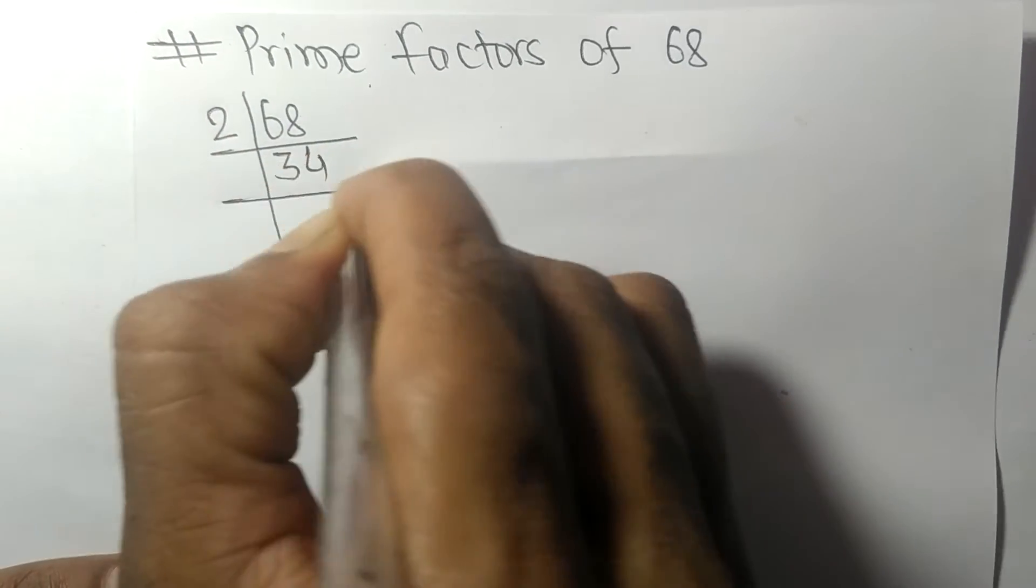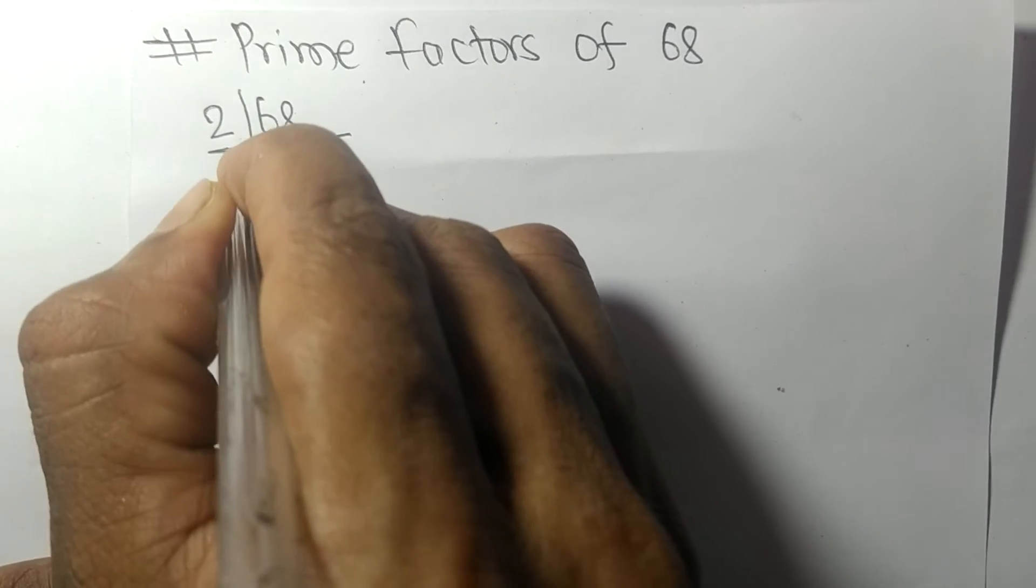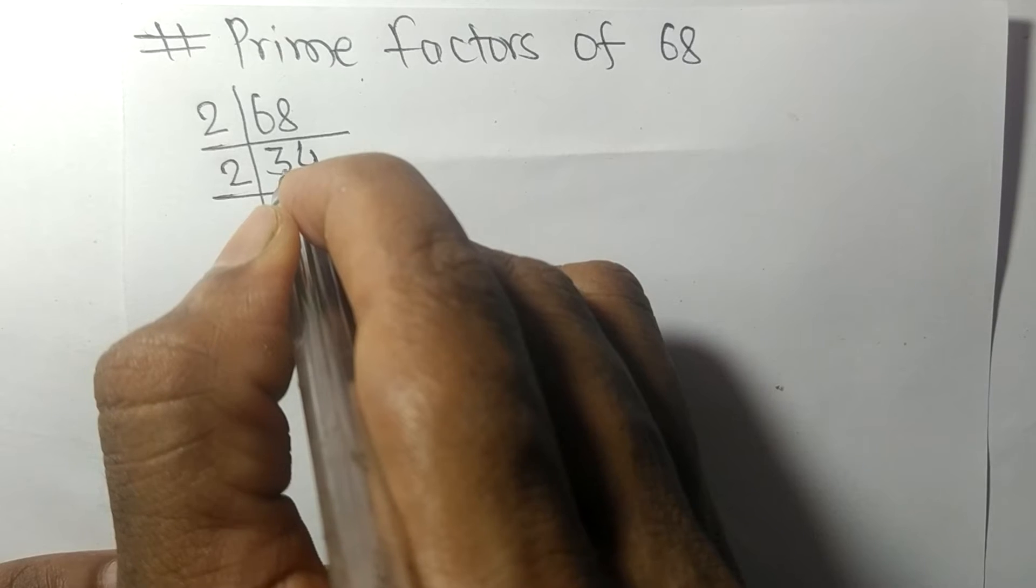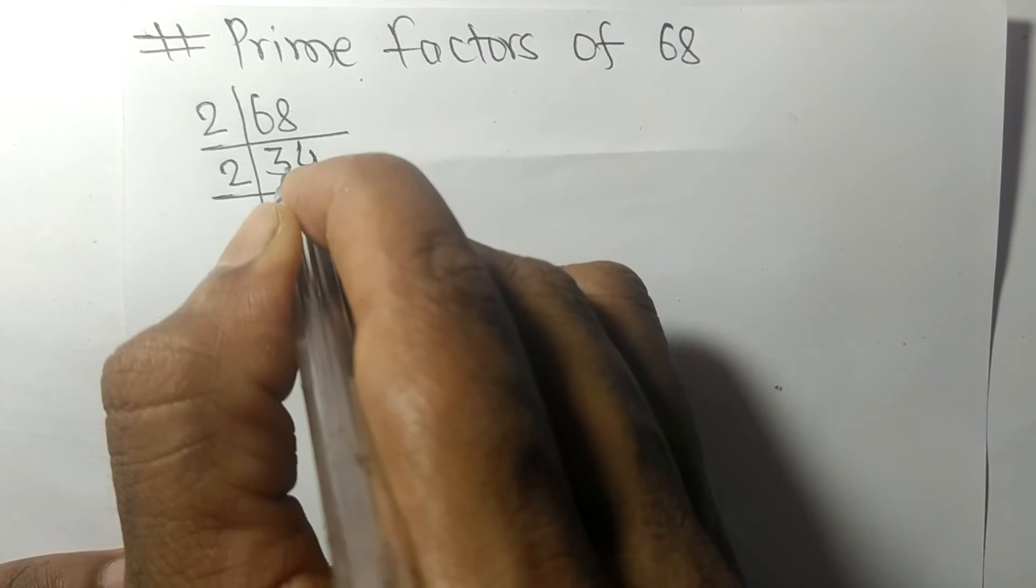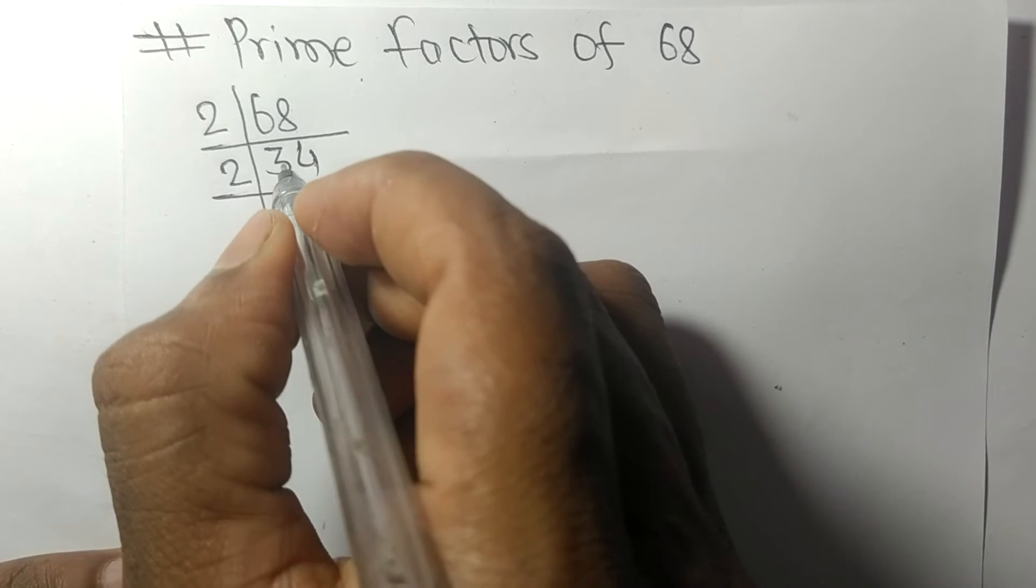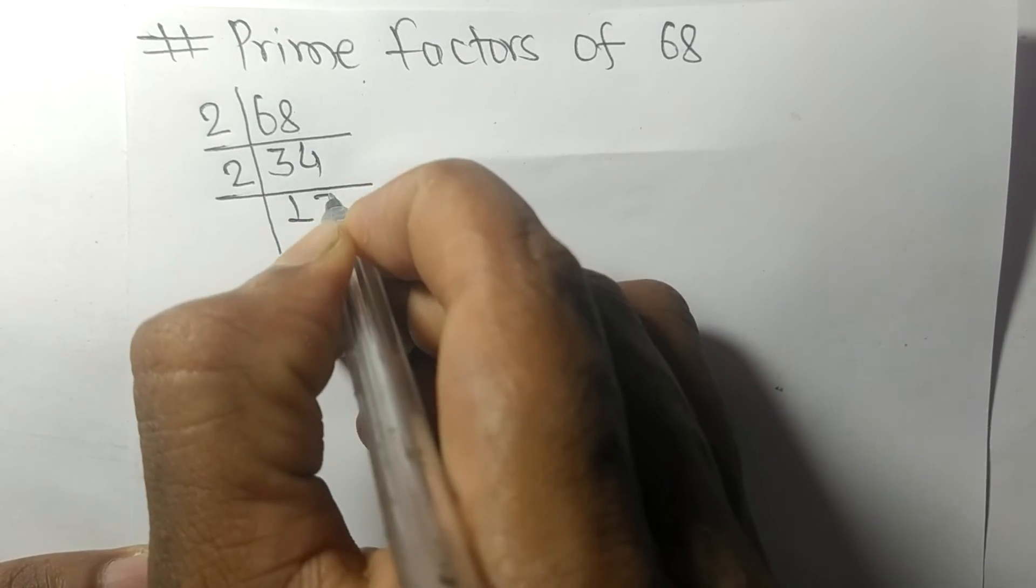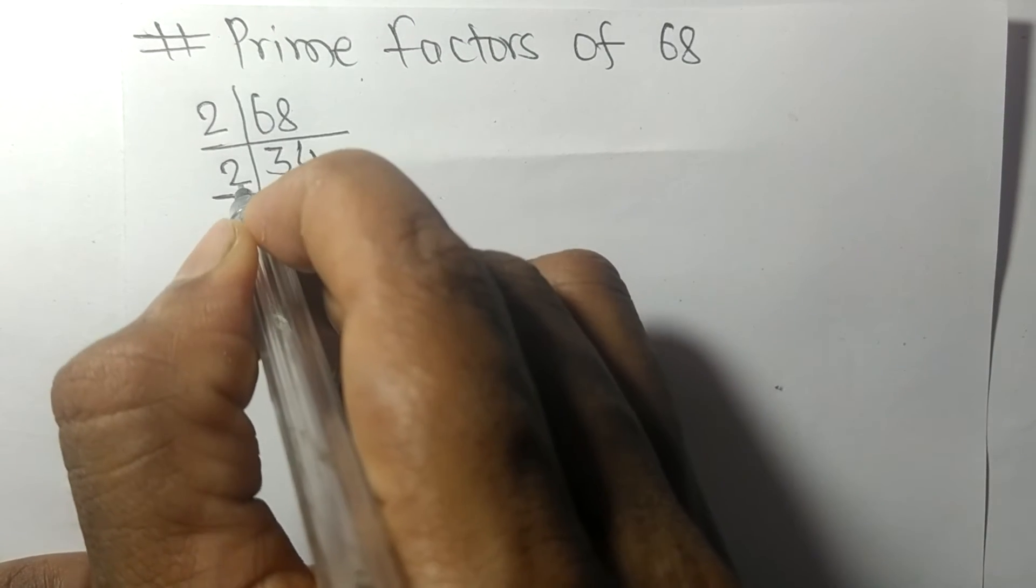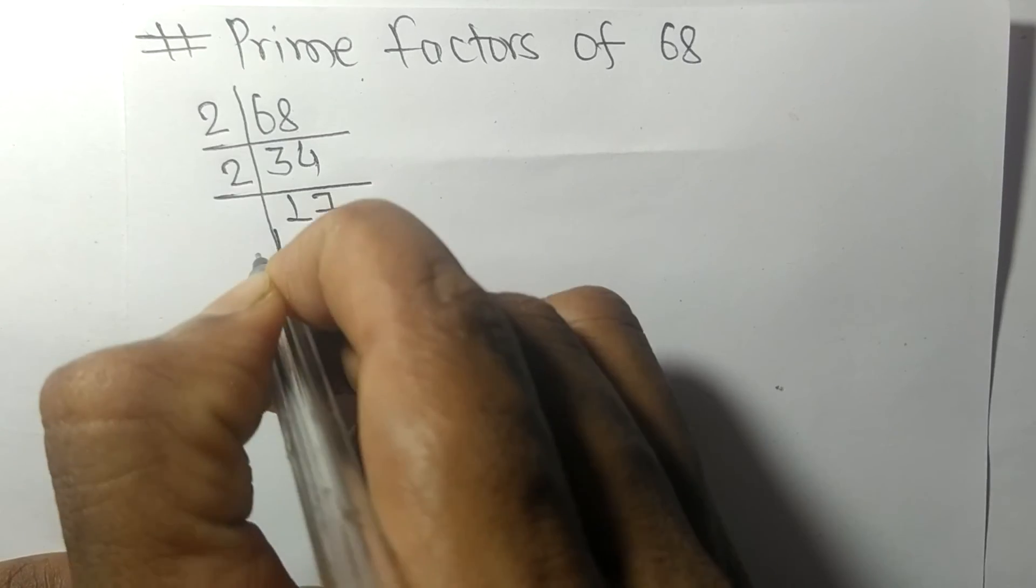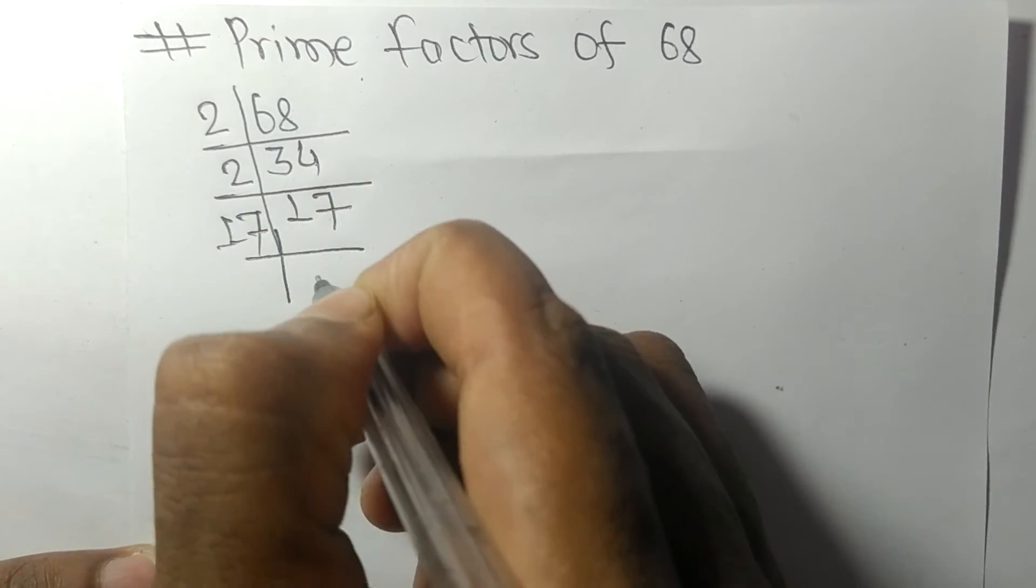Now again we have an even number, so it is divisible by 2. 34 divided by 2 we get 17. Now 17 divided by 17 we get 1.